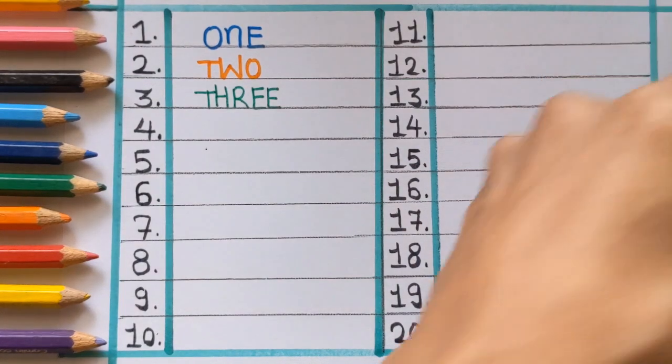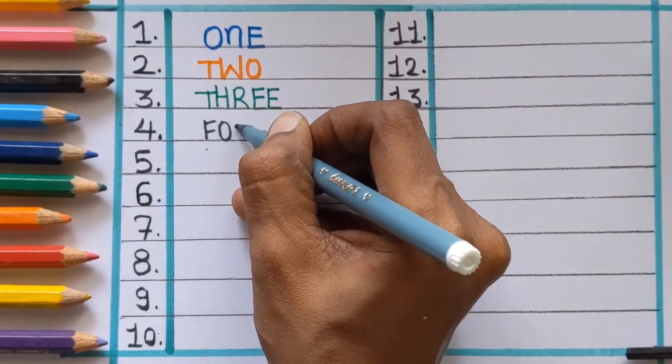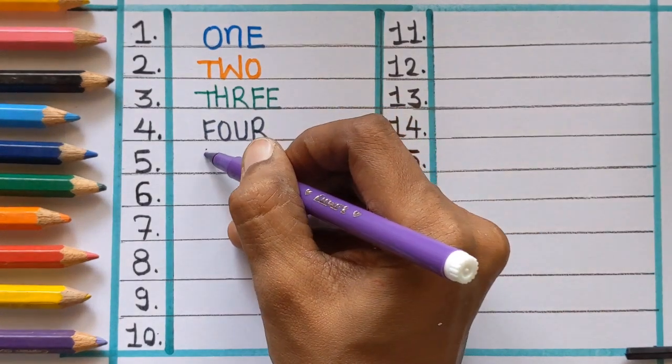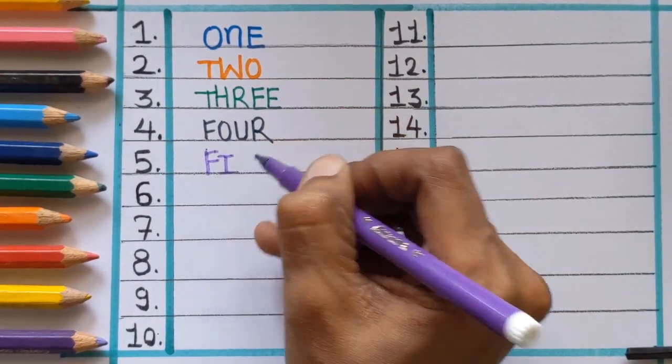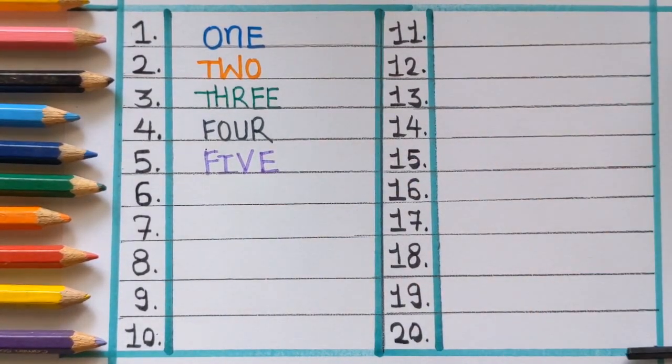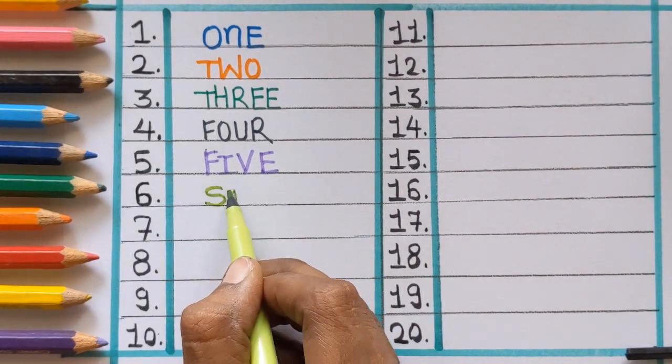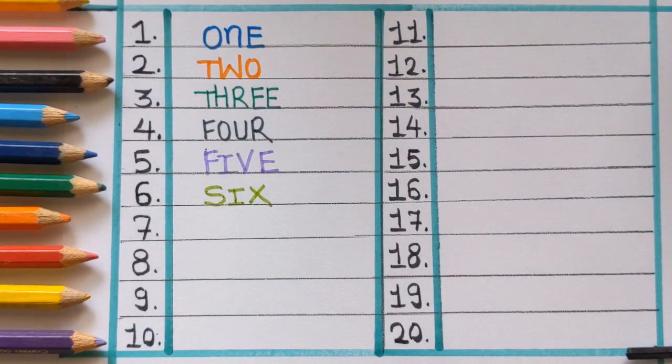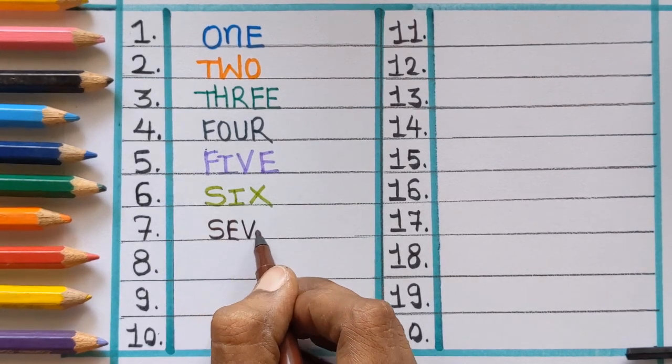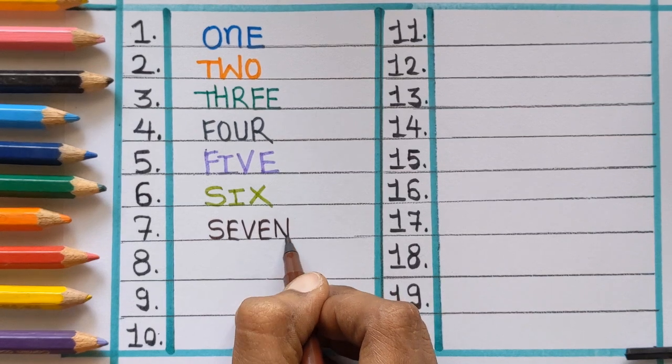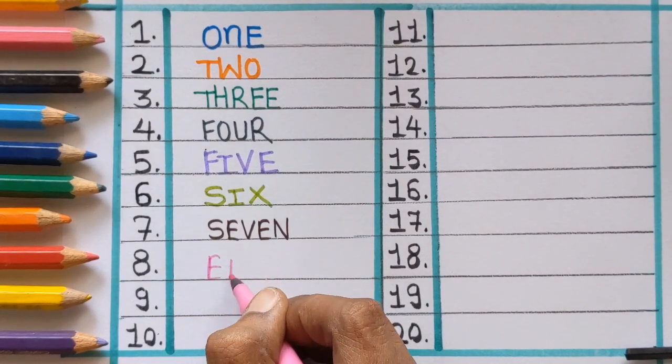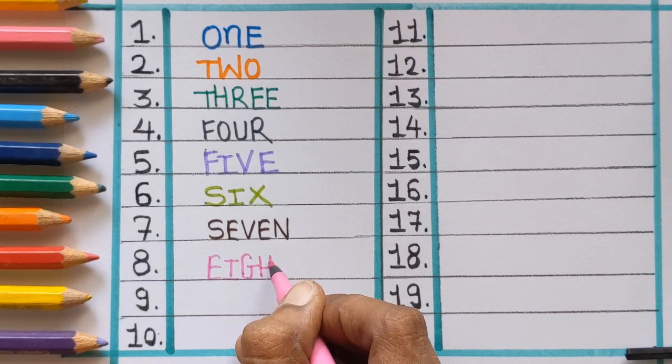Number four, F-O-U-R, four. Next number is five, F-I-V-E, five. Number six, S-I-X, six. Next number is seven, S-E-V-E-N, seven.